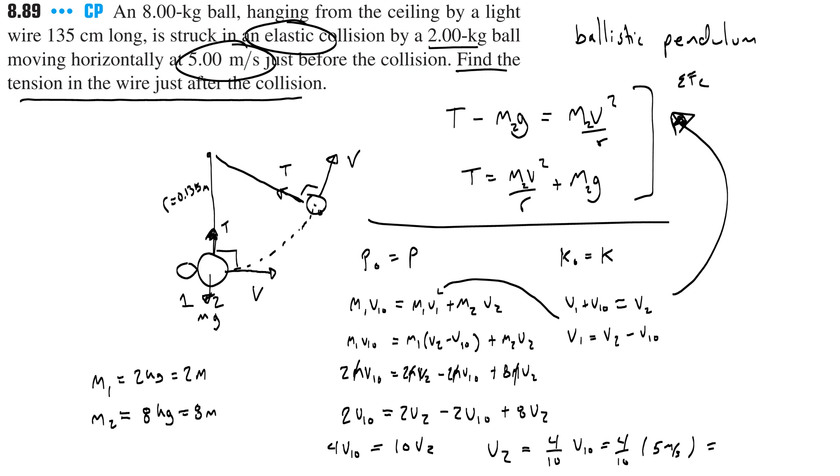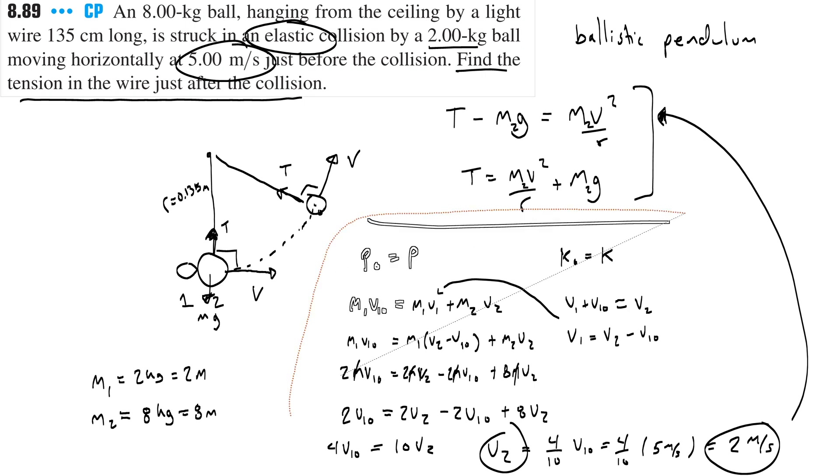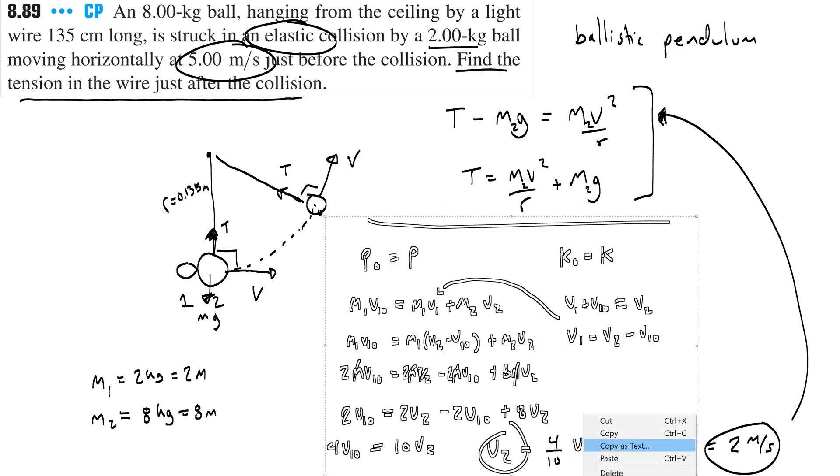Okay, so we're going to get 20 over 10, so 2 meters per second. All right, so now that I know the velocity 2 meters per second is what the hanging ball has right after the collision, then I can go ahead and plug that into the portion that we got with our centripetal force. So let's get rid of our momentum conversation, and let's go ahead and solve for the tension.